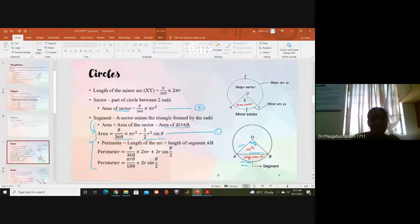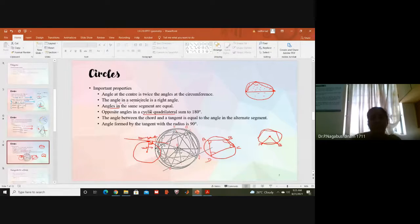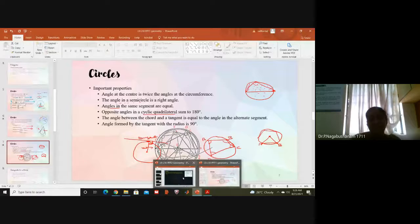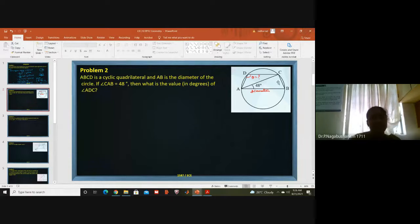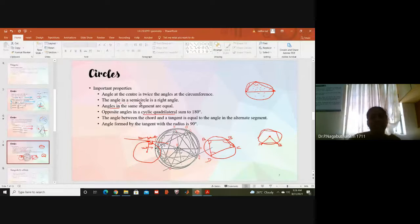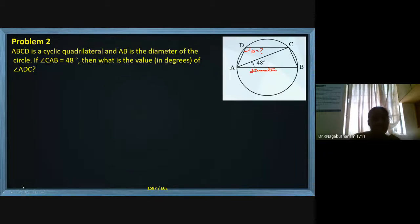A cyclic quadrilateral is a figure with four sides present inside a circle. In a cyclic quadrilateral, opposite angles sum to 180 degrees. So angle D and angle B together equal 180°, and angle A and angle C together also equal 180°. Additionally, the angle in a semicircle is a right angle — 90 degrees.